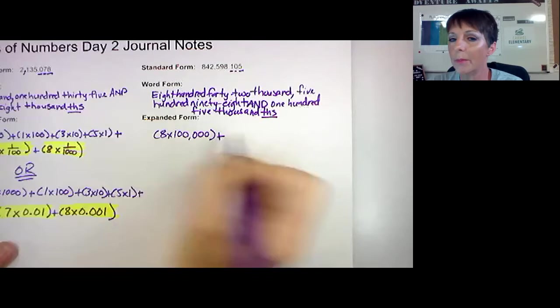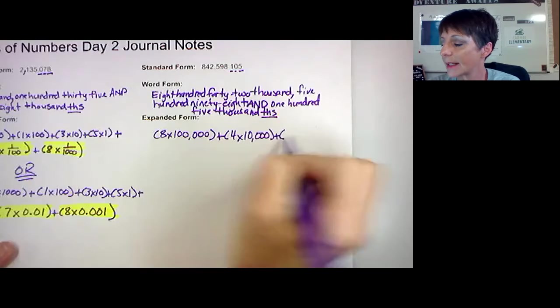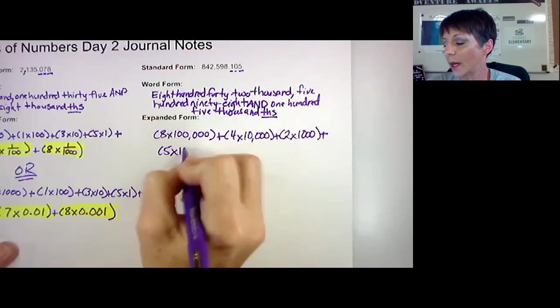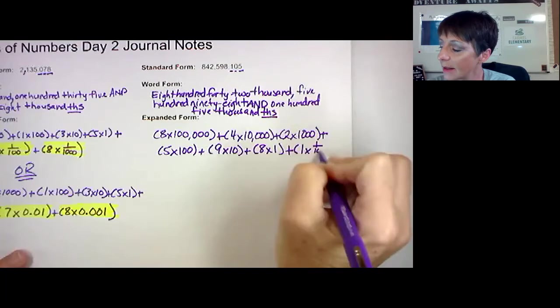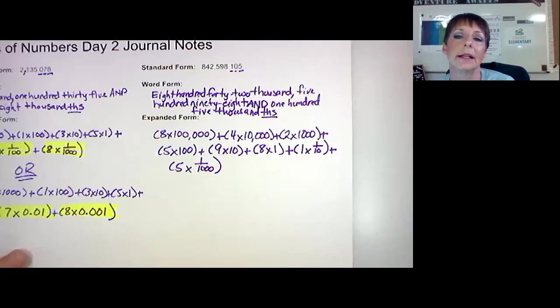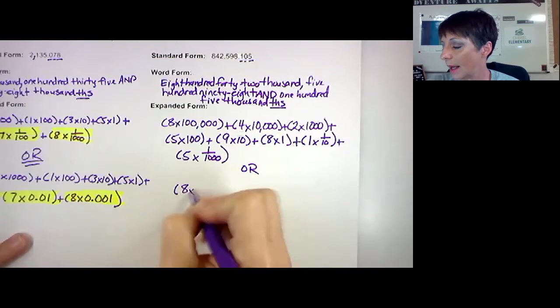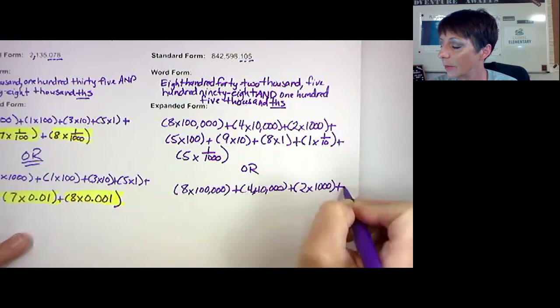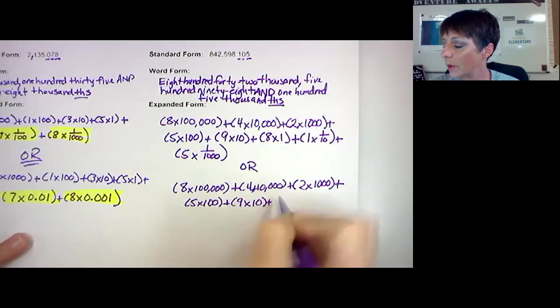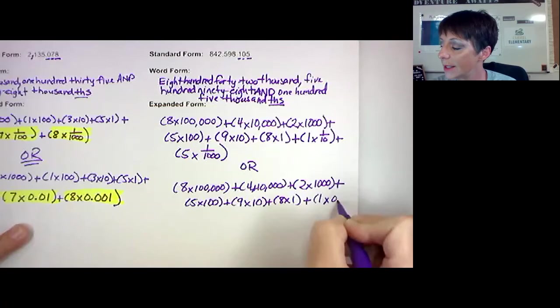Here comes expanded form. So for expanded form, 8 times 100,000 because that's the place value for that 8, plus 4 times 10,000, plus 2 times 1,000, plus 5 times 100. This part is a fourth grade review. This is the part we learned in fourth grade. 9 times 10, 8 times 1, plus, now let's do our decimal values. There's a 1 in the tenths place and there's a 5 in the thousandths place.